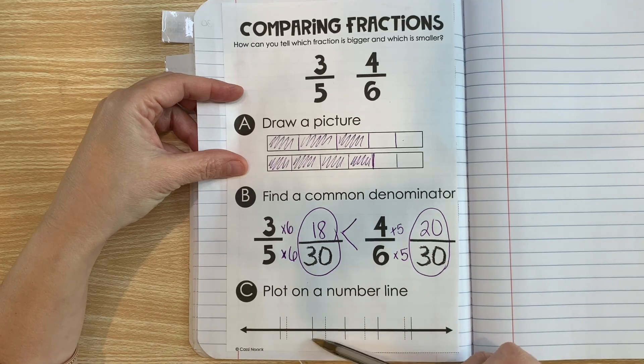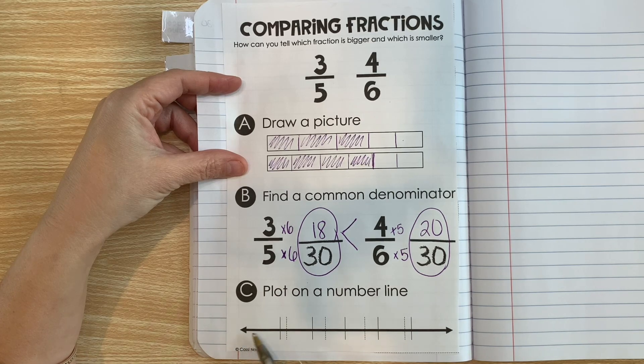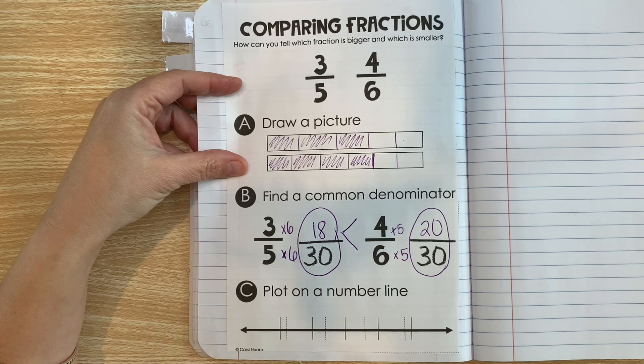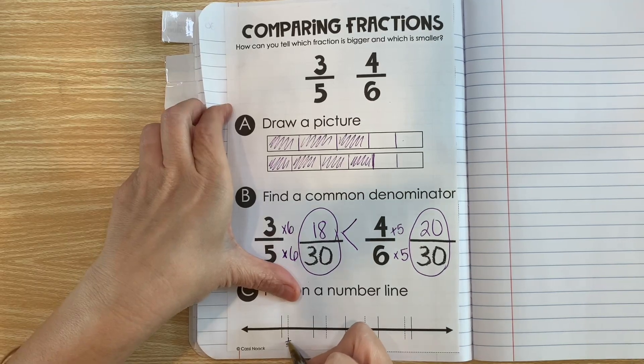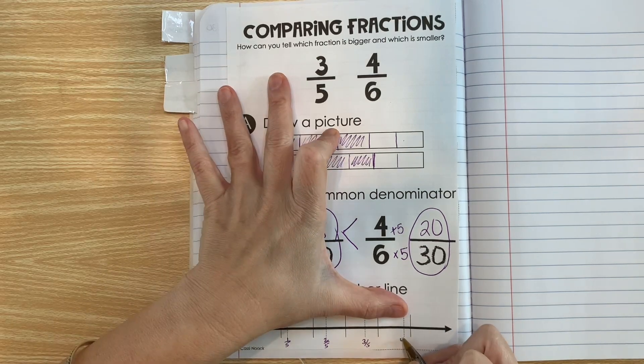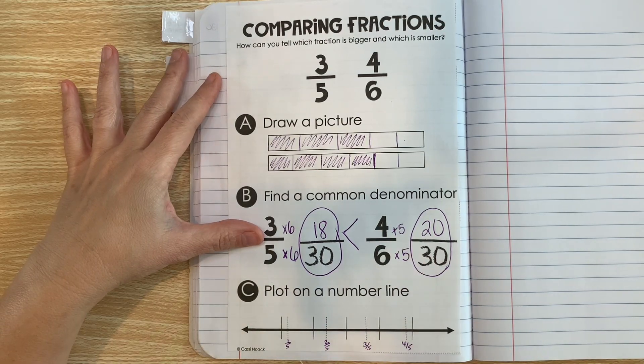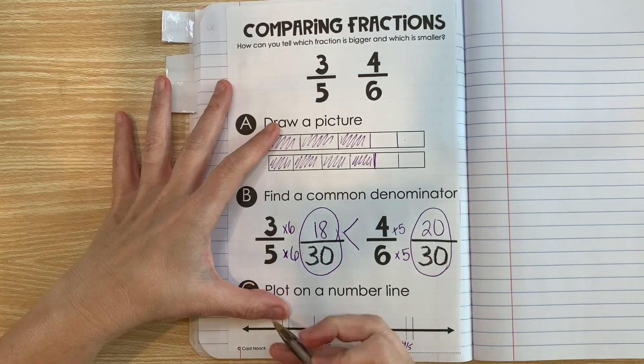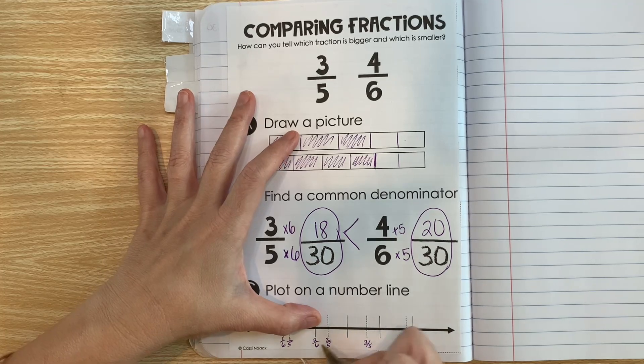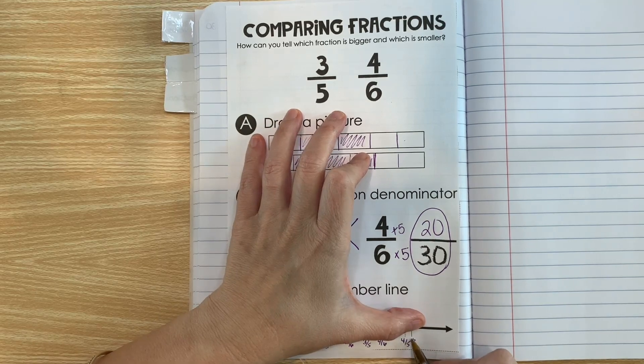All right, let's look at one more strategy. This is the number line strategy. Notice that this number line has some solid lines but it also has some dotted lines, and that's so we can show two different fractions on the same line. So the fifths are represented by the dotted line. So here is one-fifth, here is two-fifths, three-fifths, four-fifths, and the end would be five-fifths. And then the solid is the sixths. So here is one-sixth, here is two-sixths, here is three-sixths, four-sixths, and five-sixths.